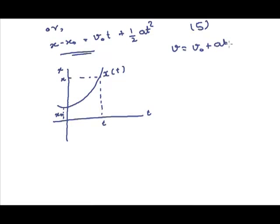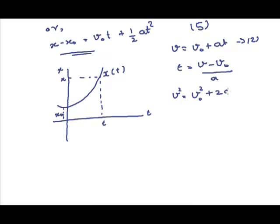Equations 5 and 2 are the basic equations of constant acceleration, and they can be combined to get another relation involving x, v, and a, eliminating t. Substituting t = (v - v0) / a from equation 2 into equation 5 and solving for v, we find equation 6: v² = v0² + 2a(x - x0). This is a velocity-dependent relation between the velocities of the object at time t and t = 0, and their corresponding positions.